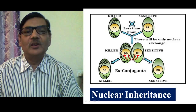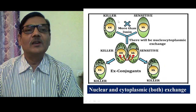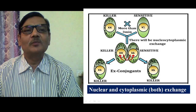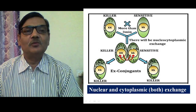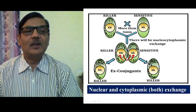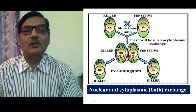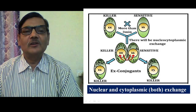If conjugation had been for longer duration, kappa particles could have transferred and the sensitive one would have changed into a killer form. In the next diagram, the killer has genotype capital K K and the sensitive has genotype small k small k. They undergo conjugation for longer duration, so there is exchange of kappa particles between the two. The ex-conjugants both have kappa particles and are genotypically capital K small k and capital K small k. The right one is now changed into a killer form because it received kappa particles from its partner and genotypically contains capital K allele to maintain them.